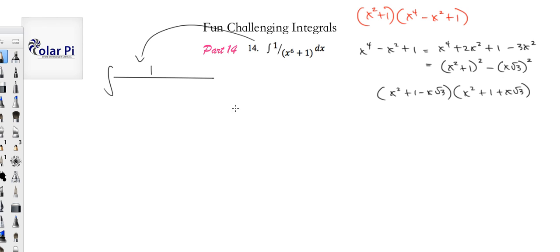And we just did all this work to factor x to the 6th plus 1. So, it's going to be x squared plus 1 times x squared plus x root 3 plus 1 times x squared minus x root 3 plus 1. And, of course, it's a dx.